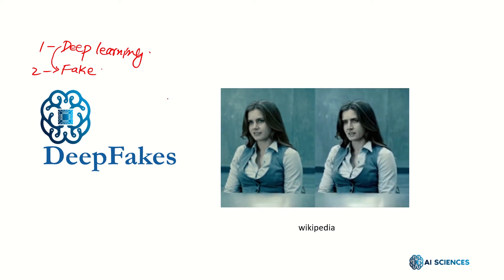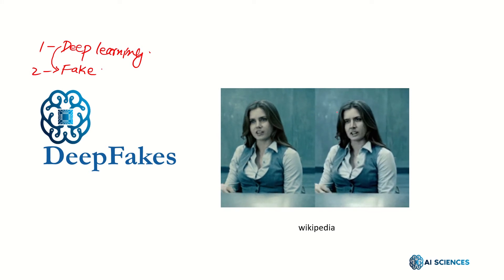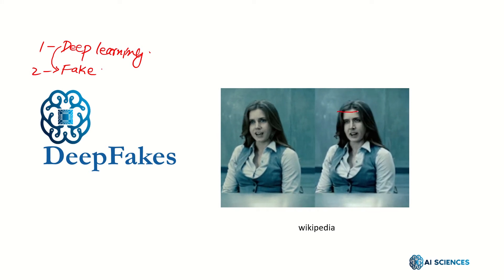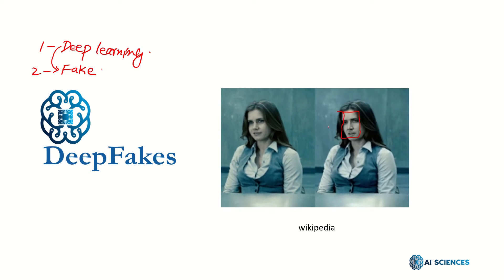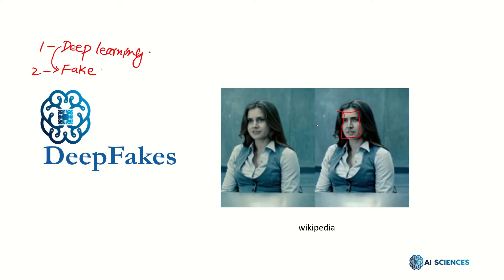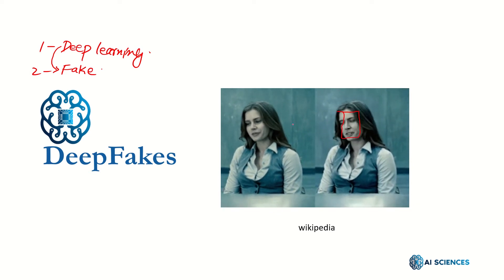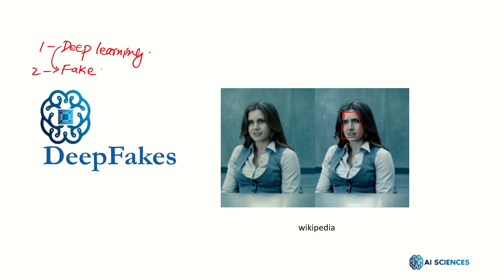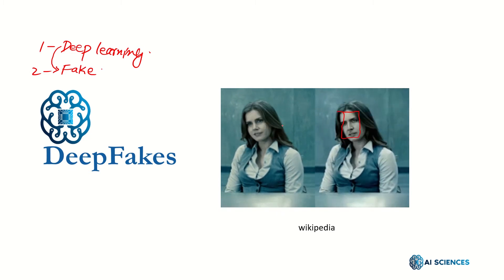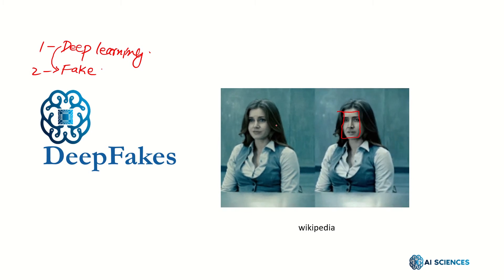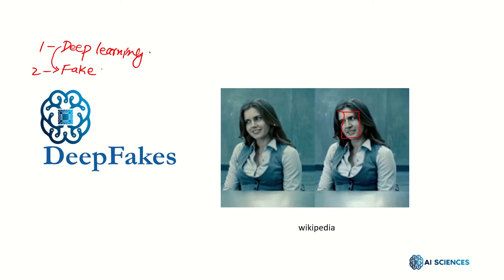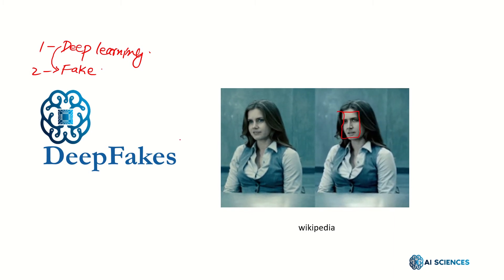Consider this face of Nicolas Cage as a target — that's the target. Deepfake superimposes face images of a target person onto a video of a source person, to create a video of the target person doing or saying things the source person does.